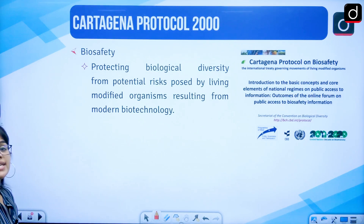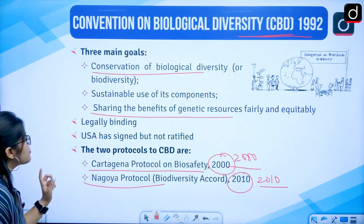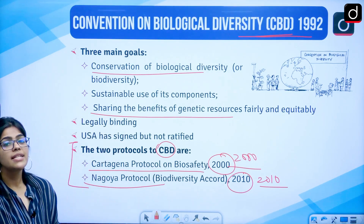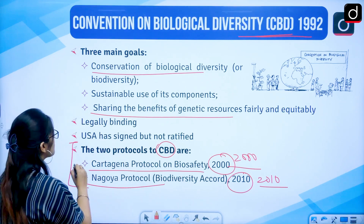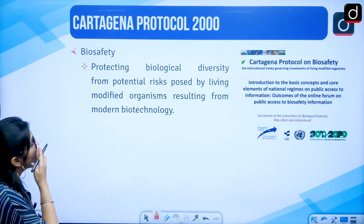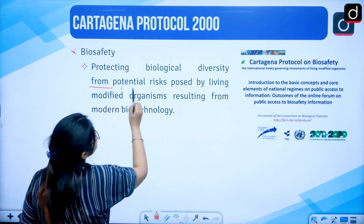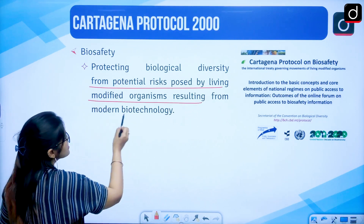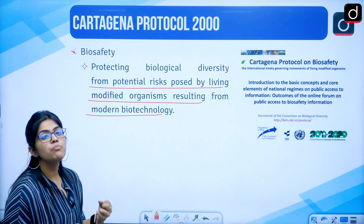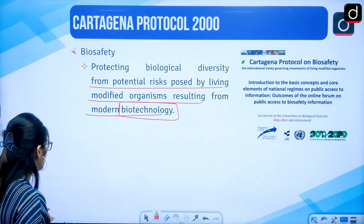Then we have the Cartagena Protocol — the child of CBD. Cartagena Protocol and Nagoya Protocol are the two children of CBD. The grandfather is the Earth Submit, the father is CBD, and the children are Cartagena Protocol and Nagoya Protocol. The Cartagena Protocol 2000 talks about the protection of biological diversity from potential risks posed by living modified organisms resulting from modern biotechnology. It promotes public awareness, biosafety information, and discussion of biotechnology.